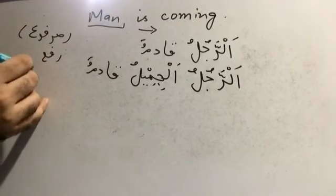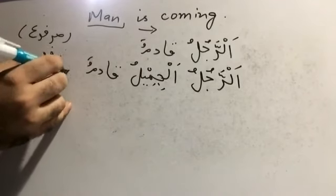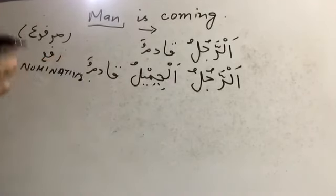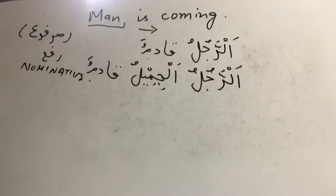Those two conditions — accusative and genitive — are not default conditions. Under certain conditions a sentence or clause can go into those cases. The first scenario is when there is a haruf ul-jar, like fi, which can put a noun into the genitive case. The haruf ul-jar are fi, ala, ila, min — whenever they come before a noun, they put the noun into the genitive case.